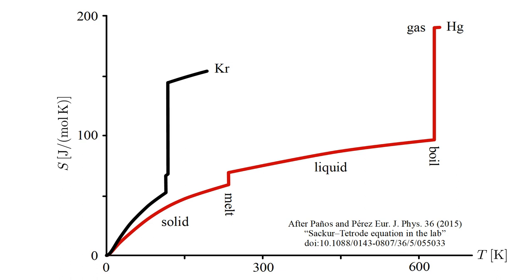Curves for other elements have similar characteristics but with different melting and boiling points. Here is the entropy curve for the noble gas Krypton. The melting and boiling points are only about four Kelvin apart, so the jumps are much closer together than for Mercury.